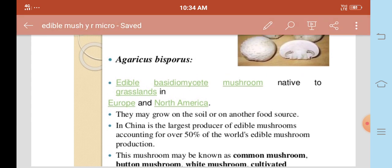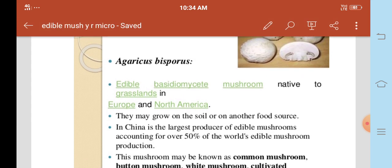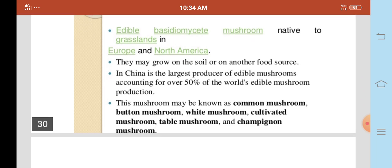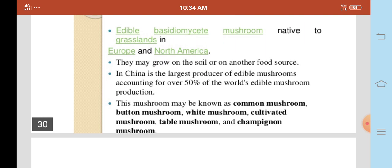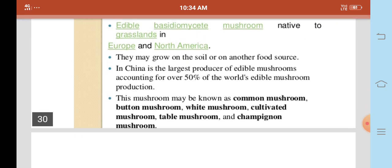Edible basidiomycetes are native to grasslands in Europe and North America. They may be grown on soil and other food sources. China is the largest producer of edible mushrooms, accounting for over 50% of the world's edible mushroom production. These mushrooms may be known as common mushroom, button mushroom, white mushroom, cultivated mushroom, table mushroom and champagne mushroom.